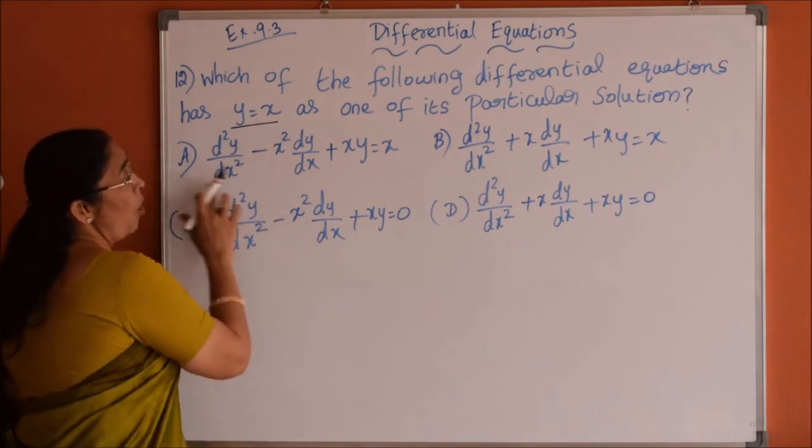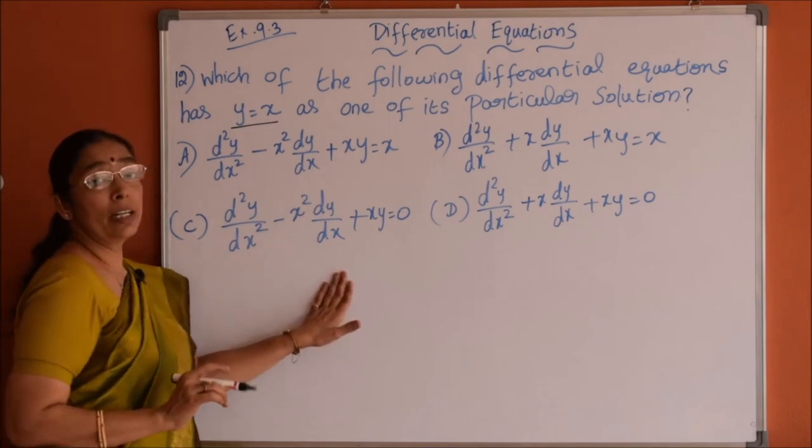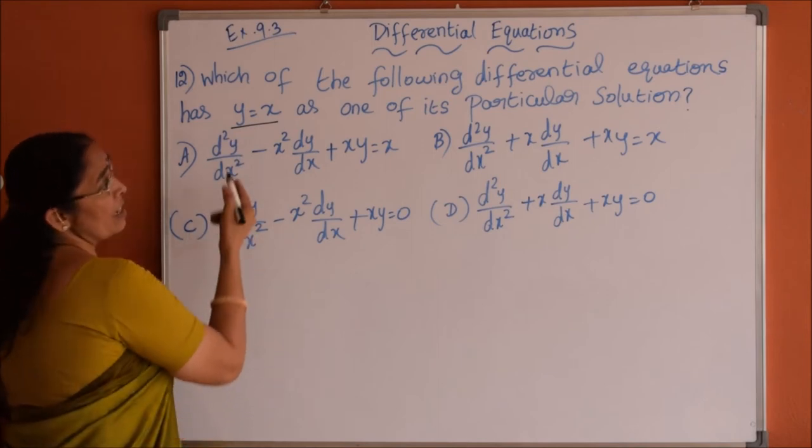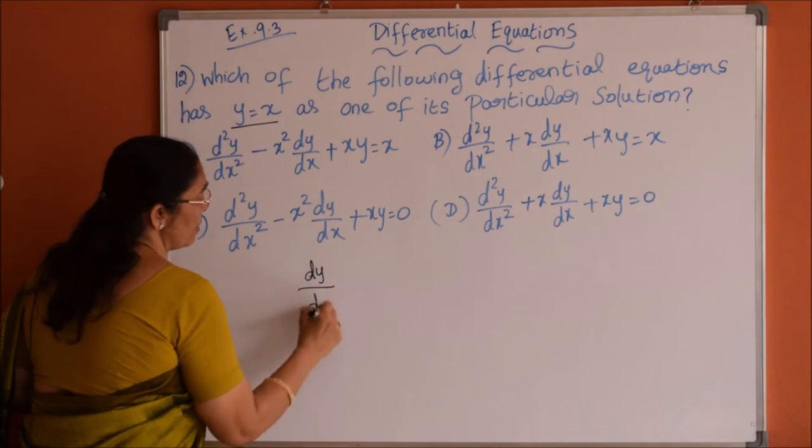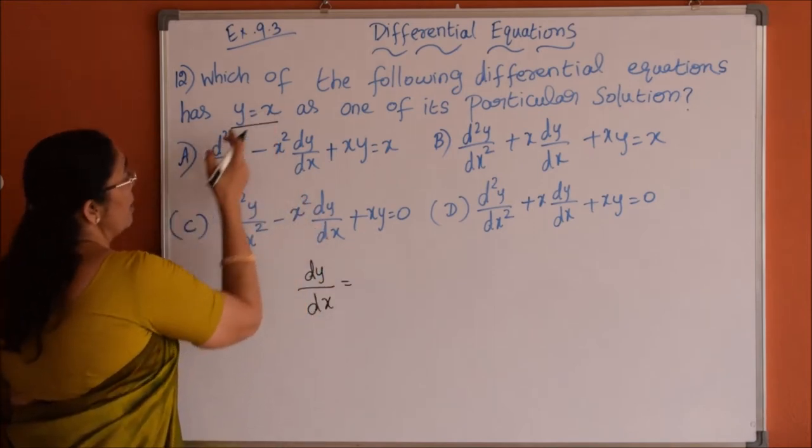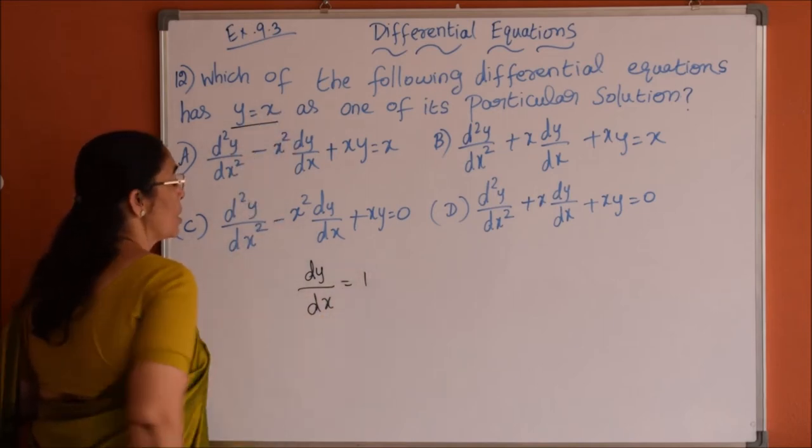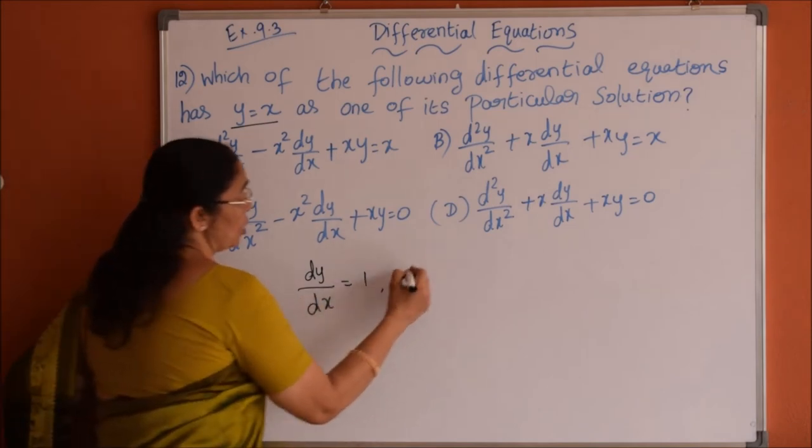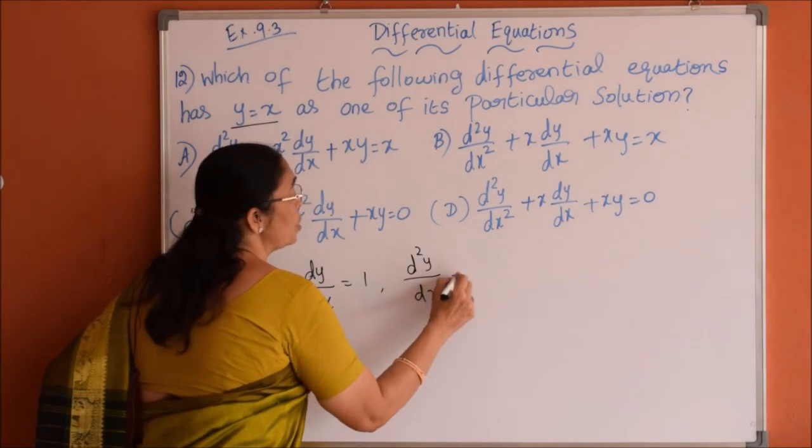Now, here all the options are nothing but second order. So first let us differentiate the given equation, y equals x. We will get dy by dx equals differentiation of x is 1. So dy by dx is 1. Now let us do second differentiation also, so d square y by dx square equals 0.